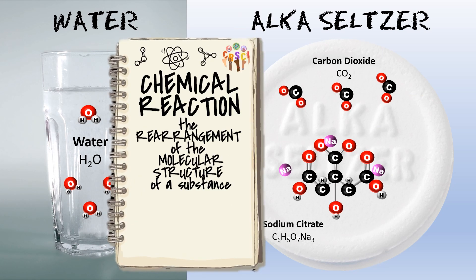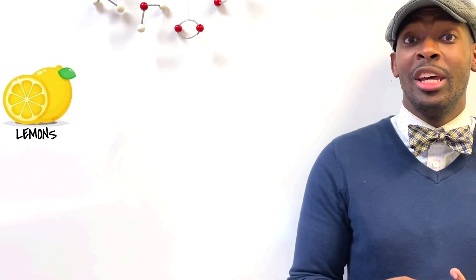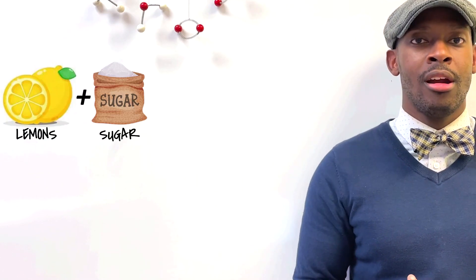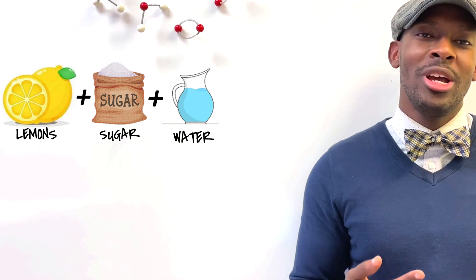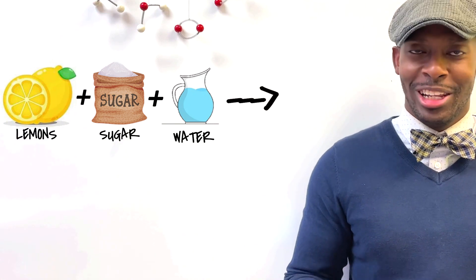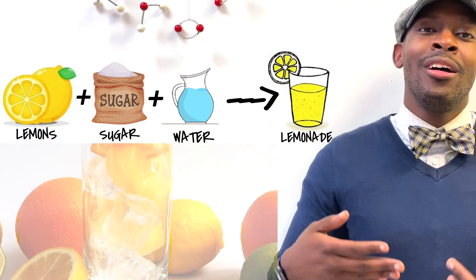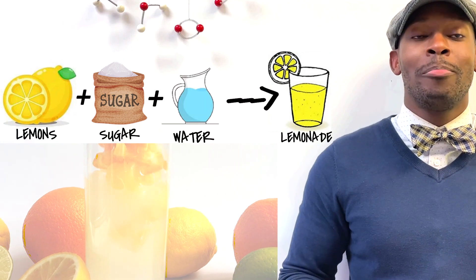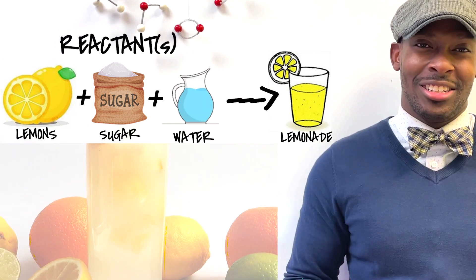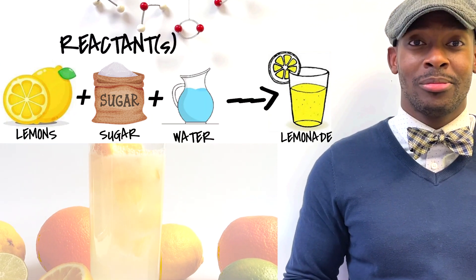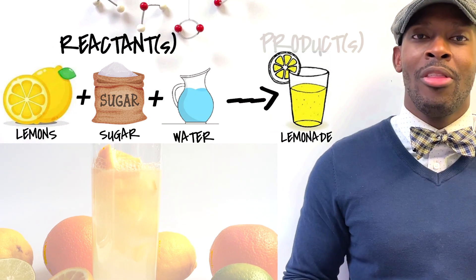Chemical equations tell the story of how they happen. For example, let's say I take lemons, sugar, and water and mix them together to make lemonade. The lemons, sugar, and water can be considered to be reactants in a chemical equation, and the lemonade would be the product.